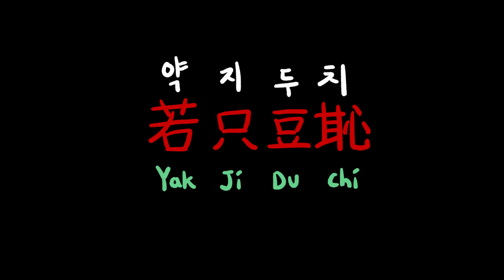Hey, this is Winfred. In this video, I'm going to analyze what this Goguryeoic word means. It's pronounced Yakjiduchi, which was the name of a walled town that is now called, in Gyeonggi-do, Jangdan-gun, Songlim-hyun. It's a small village near the North Korean border.